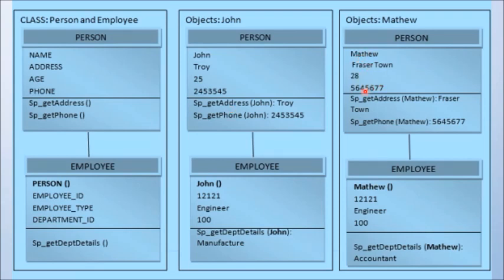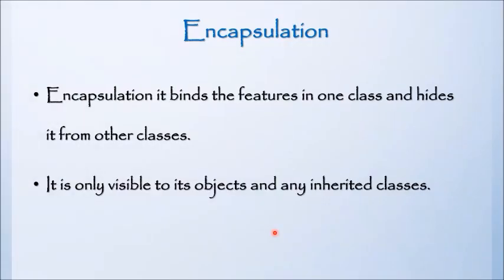Matthew, Fraser Town, 28, 56-45-67, get_address of Matthew, get_phone of Matthew forms another person object. Now, we will create another class called employee, which will inherit all functionalities of person class. In addition, it will have attributes employee id, employee type, and department id, and sp_get_department_details procedure. Different objects of employee class are engineer, accountant, manager and clerk.